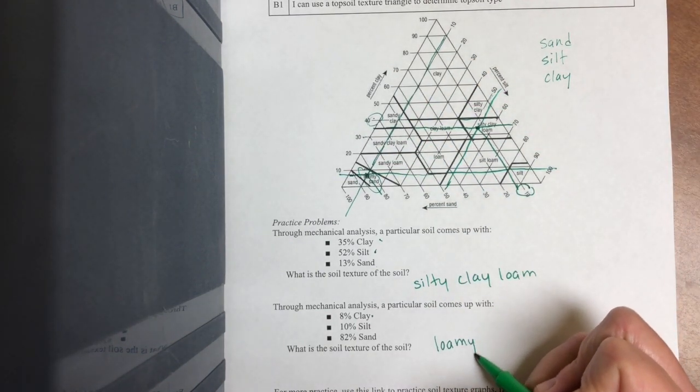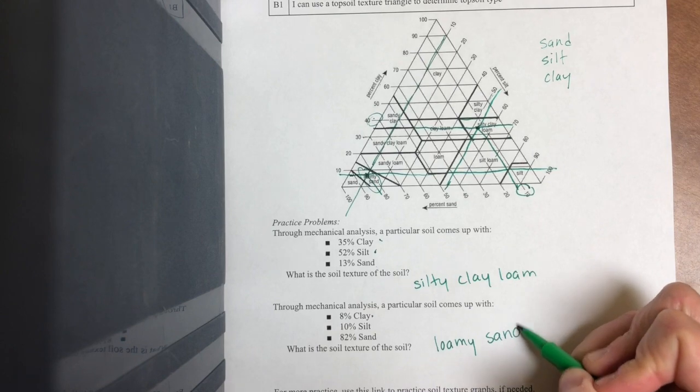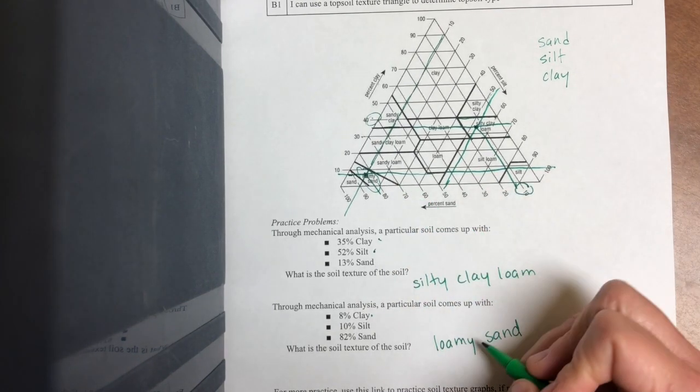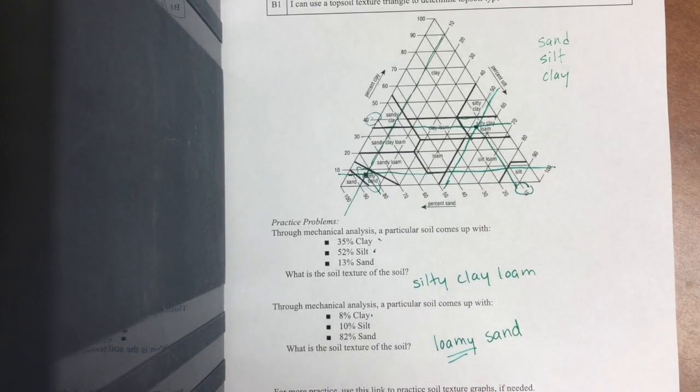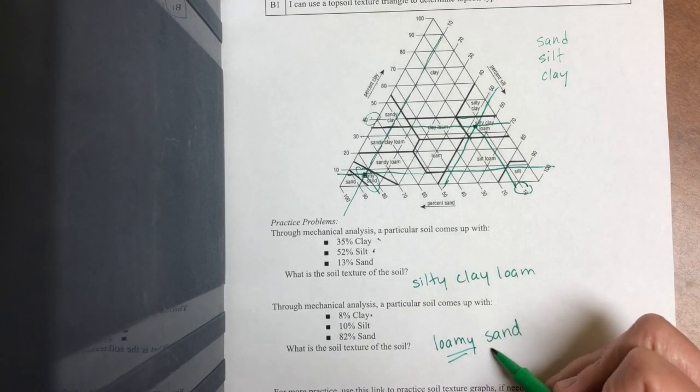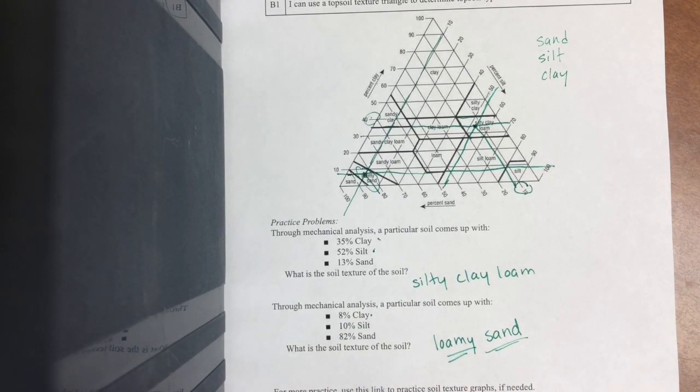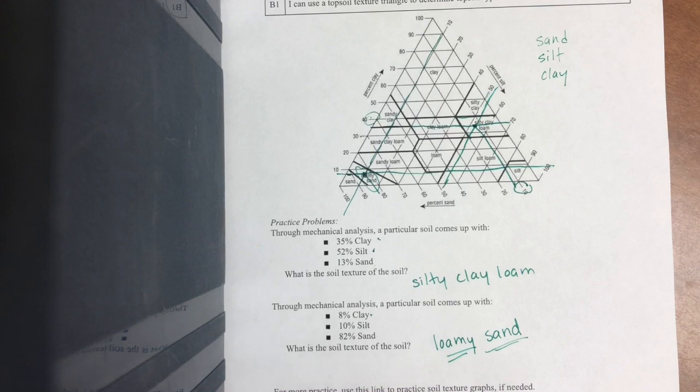So you might be like, see Mrs. Reichen, you're wrong, we all make mistakes. But notice it's loamy, meaning there is a mixture, so there's other stuff in there, but basically the only word in this name is sand, which tells me this is primarily a sandy soil.